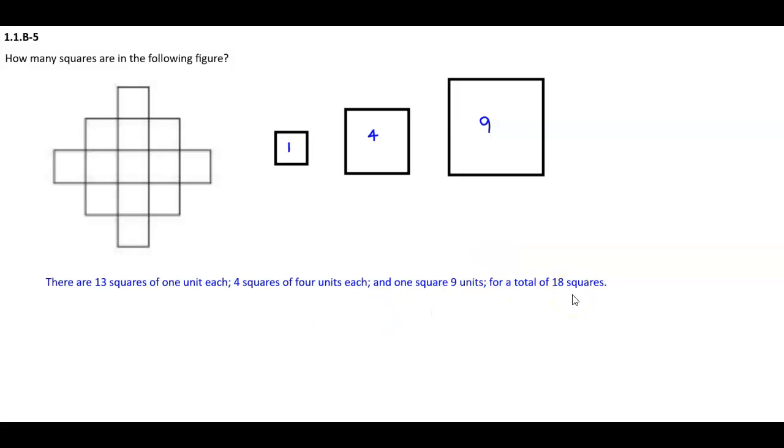So let's add them up. We have thirteen squares of one. We have four squares of four units each, plus four. And then we have one square of nine. When we add that together, we get eighteen squares.